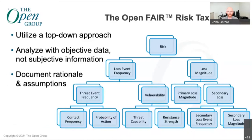The Open FAIR taxonomy is comprised of two parts: on one side, Loss Event Frequency with its sub-components, and on the other, the Loss Magnitude side with its sub-components. Open FAIR advocates for a top-down approach — you only need to go to the layer within this risk tree that is necessary for the purpose of your analysis.